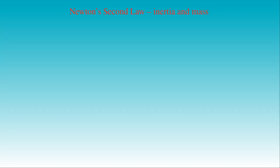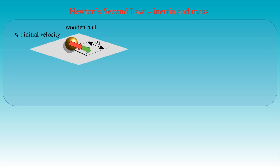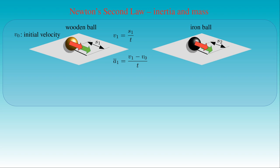If we study the relationship between acceleration and force, we can also determine the relationship between acceleration and inertia, and introduce the concept of mass. In the experiment with the wooden ball, if we apply a given force then the ball travels distance s1 in time t. Its velocity v1 equals s1/t and its average acceleration a1 equals (v1 − v0)/t. If we repeat the experiment with an iron ball of the same size and apply the same force, the iron ball will travel a smaller distance s2 in time t. The velocity v2 equals s2/t and is less than v1; consequently the acceleration a2 is also smaller than a1.